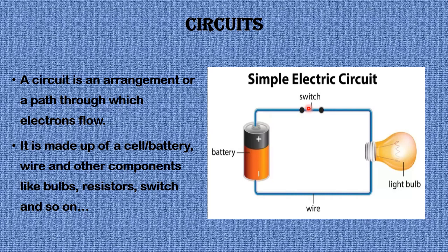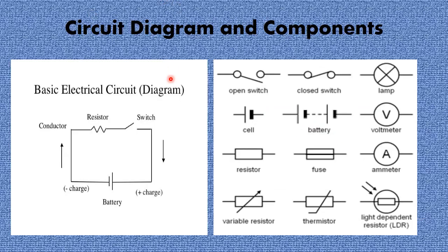The switch helps to ensure that current flows throughout the circuit. Once the switch is off, the electrons will stop flowing; once the switch is on, the electrons will flow. The source of electrons is the battery or cell, and the wire helps move the electrons along a certain path. Once the electrons reach the bulb, the bulb lights up. This is the diagram of a simple electric circuit.